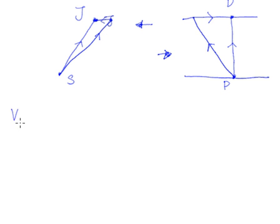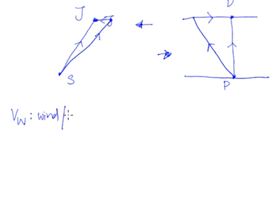The first vector is VW, which represents the velocity of the wind — or water. I like to use W because it works for aeroplane questions and it works for river questions. Water or wind.